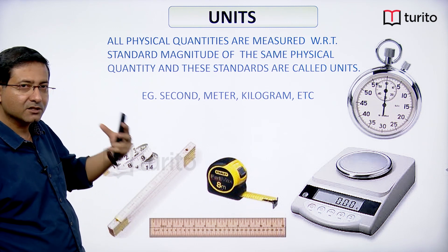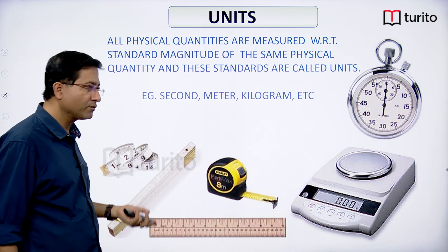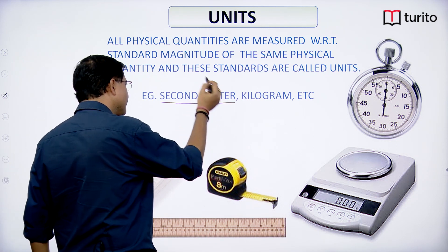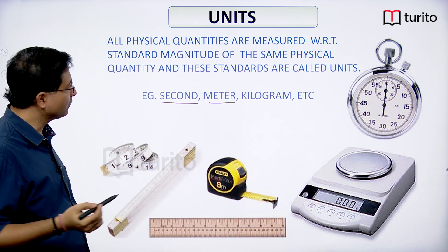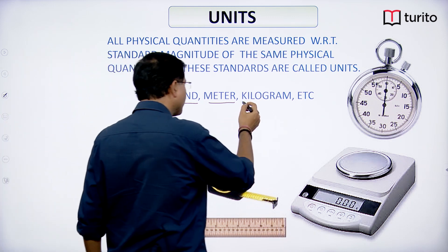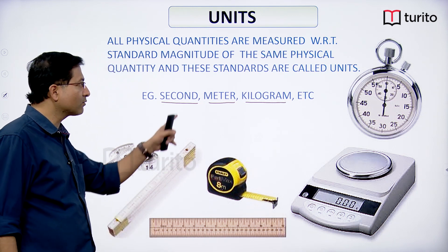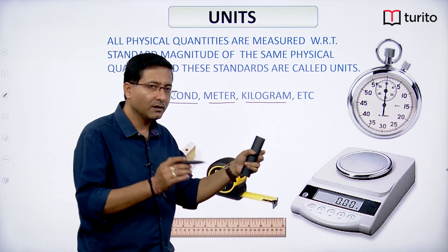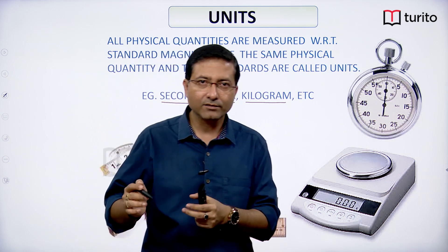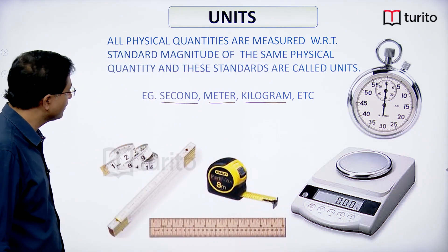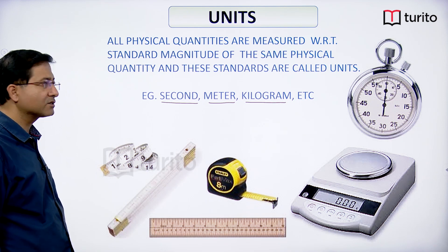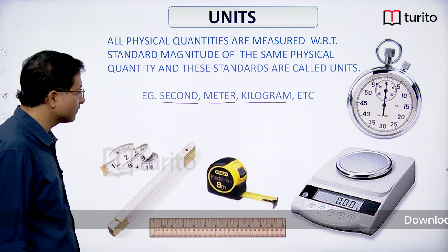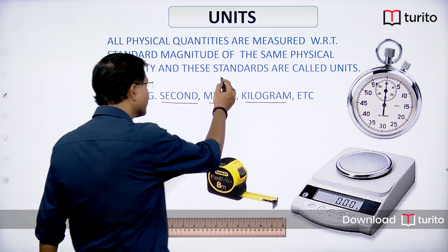We compare with the standard, and that standard we call a unit. The unit of time is the second, the unit of length is the meter, and the unit of mass is the kilogram. These are the units of the physical quantities time, length, and mass. Different physical quantities have different units of measurement. All physical quantities are measured with respect to a standard magnitude of the same physical quantity, and these standards are called units.